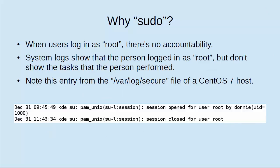Also, when users log in as the root user, there's no accountability because the system logs are going to show that the person logged in as root and when the person logged out from the root account, but they won't show the tasks that the person performed while logged in as root. You can see in this entry from the var log secure file of a CentOS 7 machine where user Donnie logged in as the root user at time 9:45 and then logged out from the root account at time 11:43, but it doesn't show anything that happened between the log in and the log out.